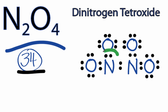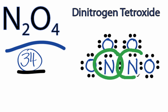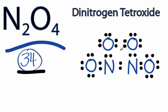However, each nitrogen only has six valence electrons, so we've not filled the octets for the nitrogen atoms. We can take two valence electrons from up here and share them to form a double bond — let's do that for both of these oxygens here.